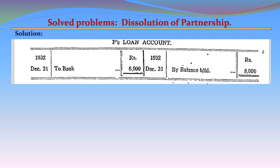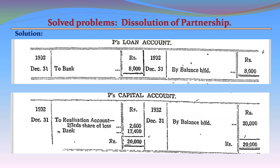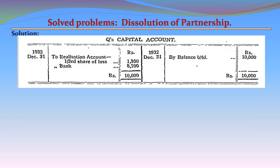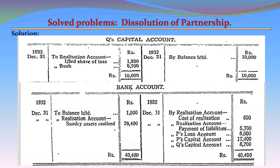P's Loan Account: Credit side — By balance b/d 8,000; Debit side — To Bank 8,000. P's loan is thus paid off. P's Capital Account: Credit side — By balance b/d 20,000; Debit side — To Realization Account (loss) 2,600; To Bank (final settlement) 17,400. Q's Capital Account: Credit side — By balance b/d 10,000; Debit side — To Realization Account (loss) 1,300; To Bank 8,700. Q's account is settled.